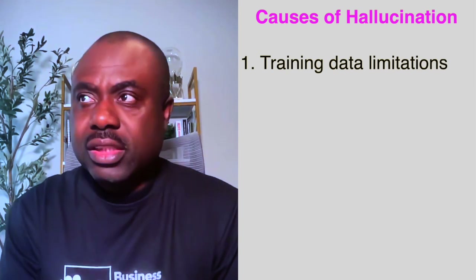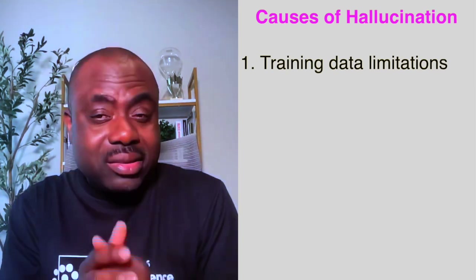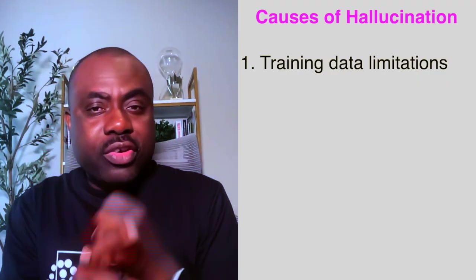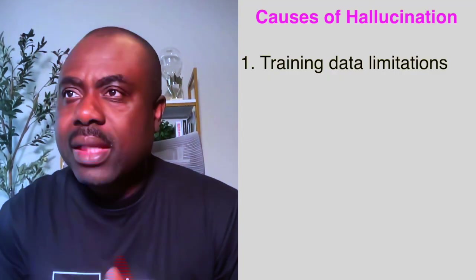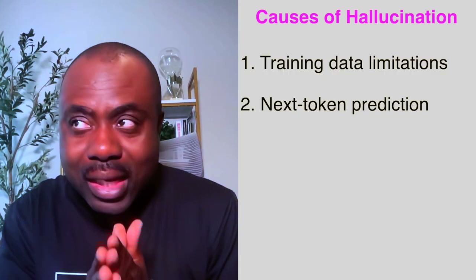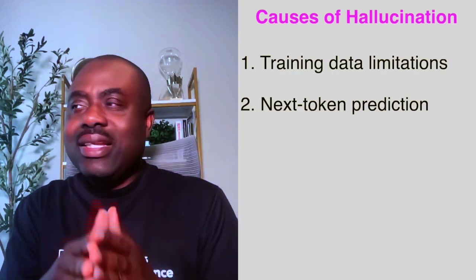Hallucination is a big problem in large language models, and many people already know this. But what are some of the causes? Number one is training data limitations. If the model hasn't been trained with accurate data, it may guess the response, and sometimes this leads to hallucination. Number two is text prediction — LLMs don't know facts; they are only predicting the most likely sequence of words.